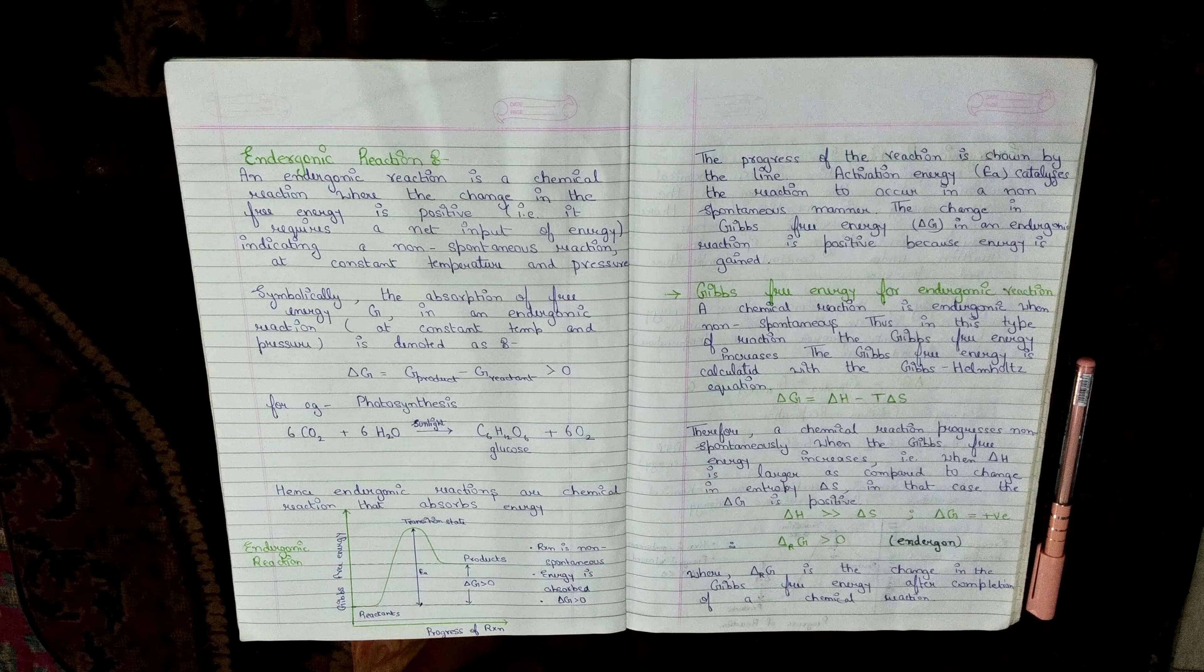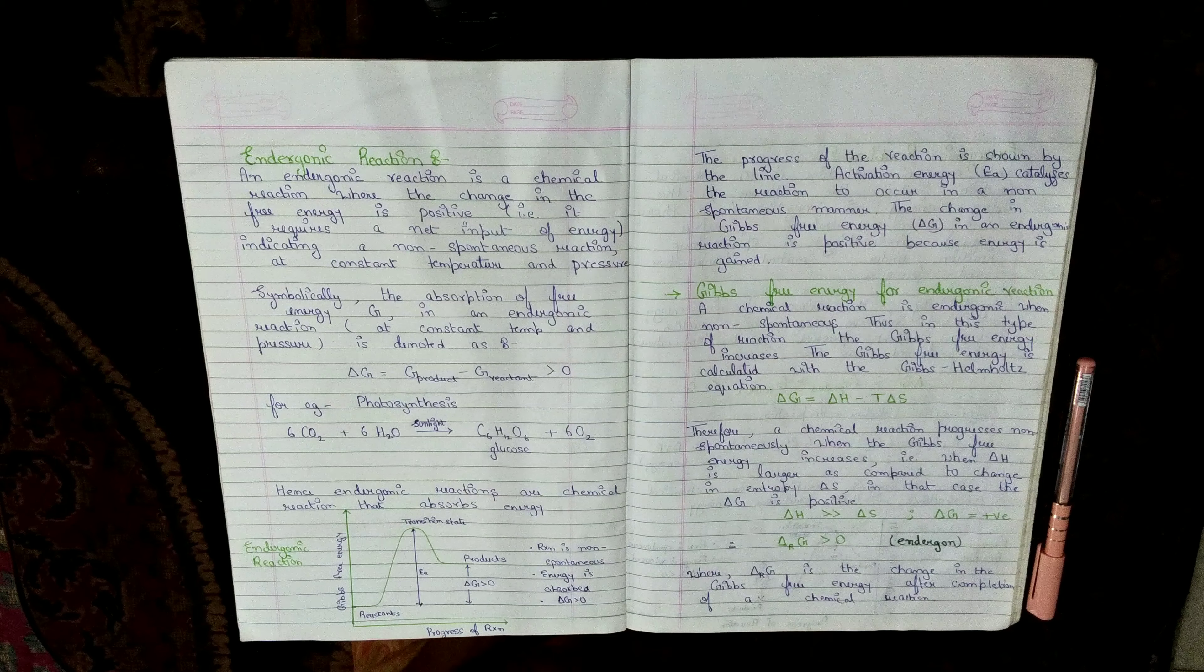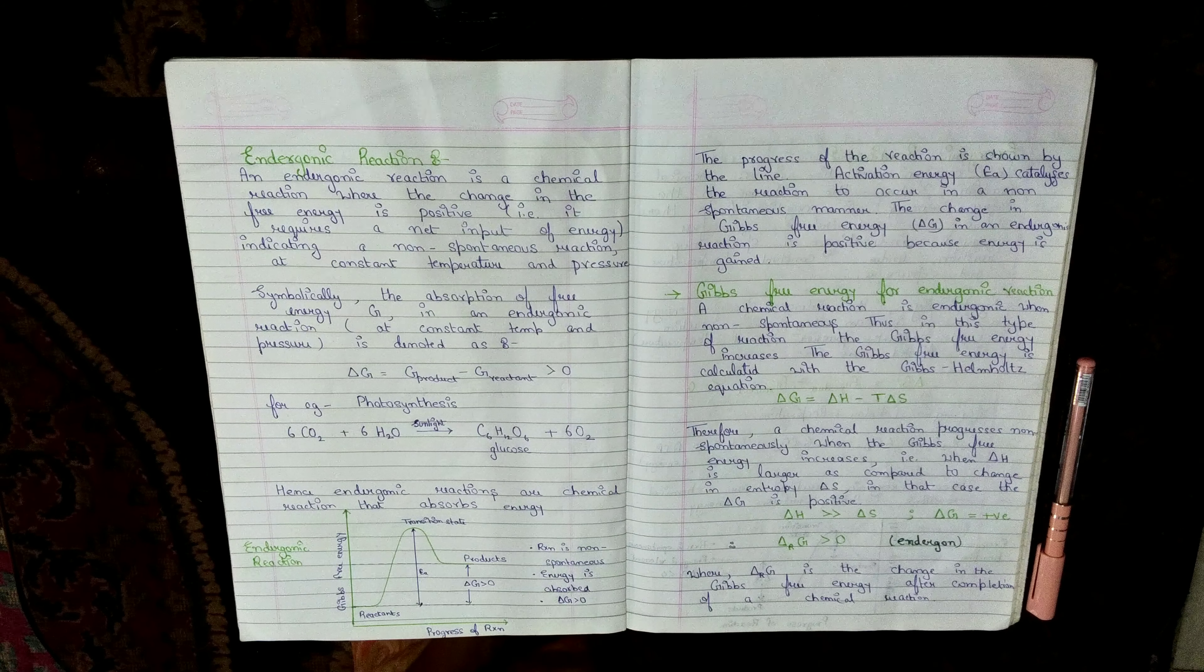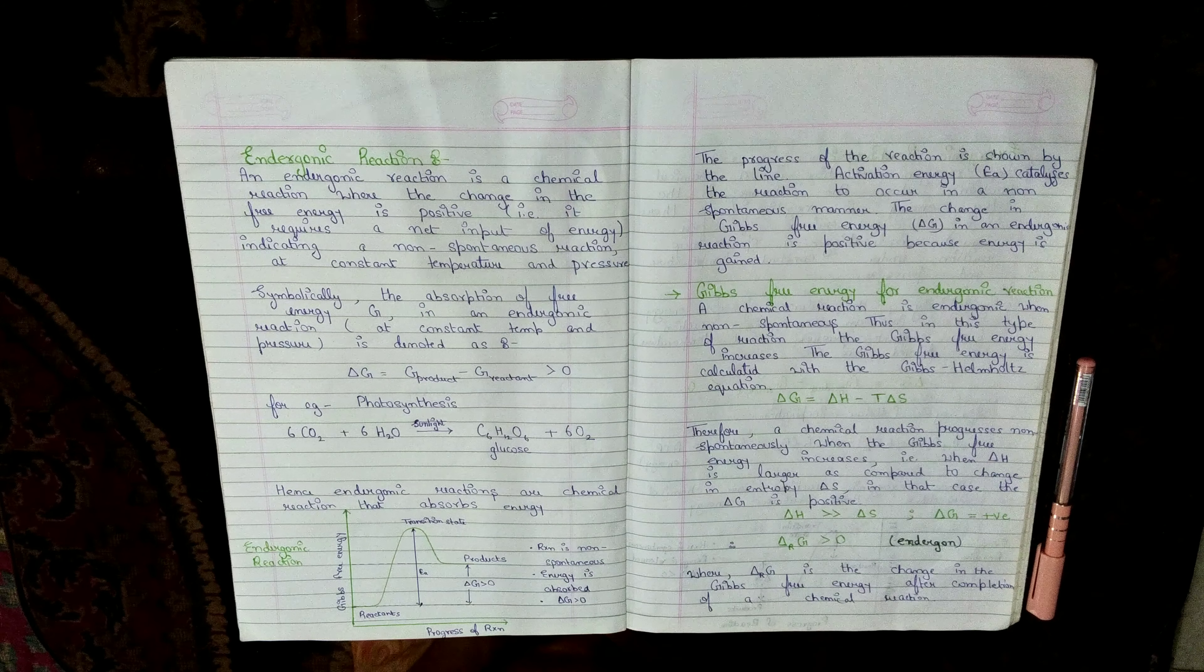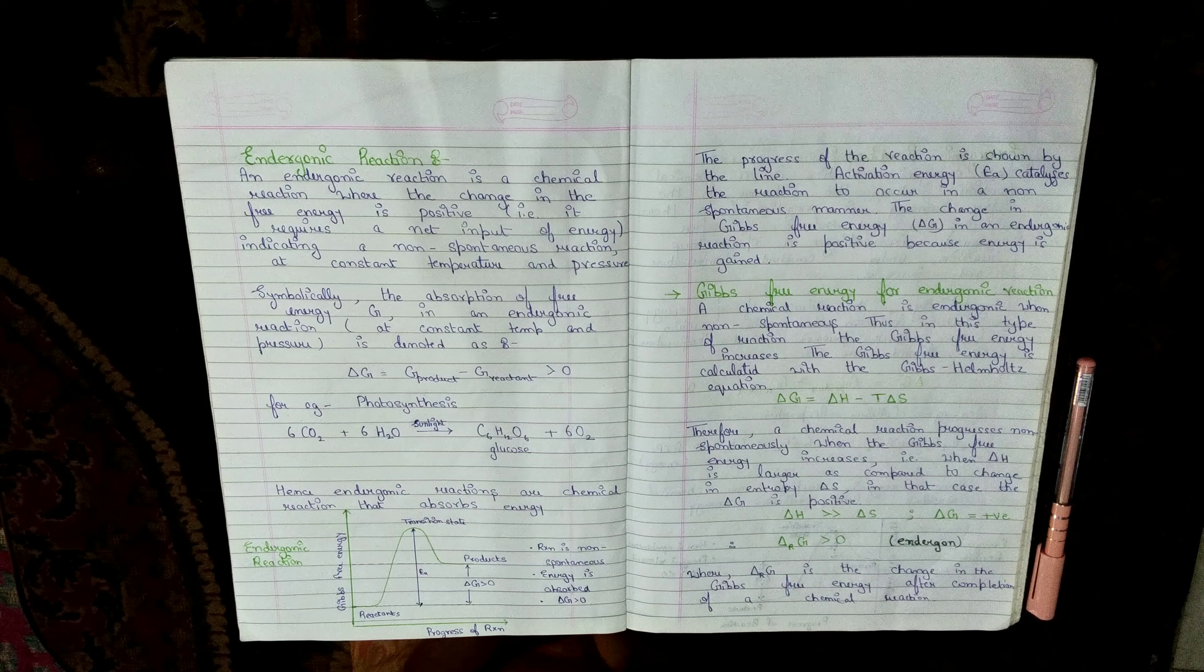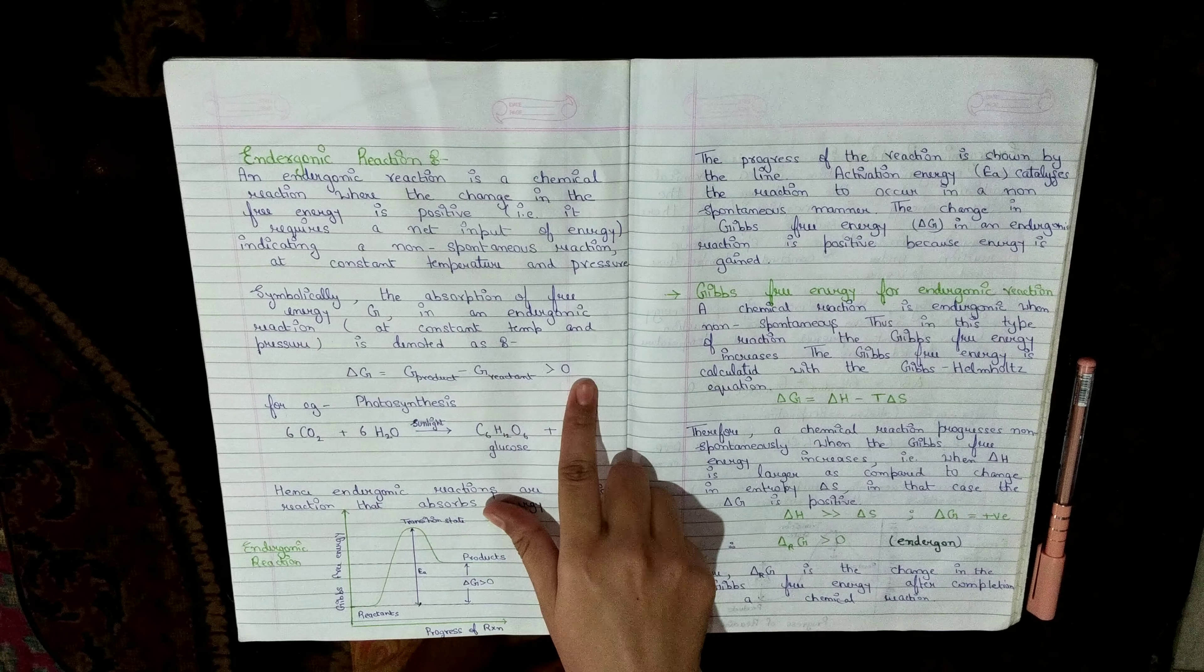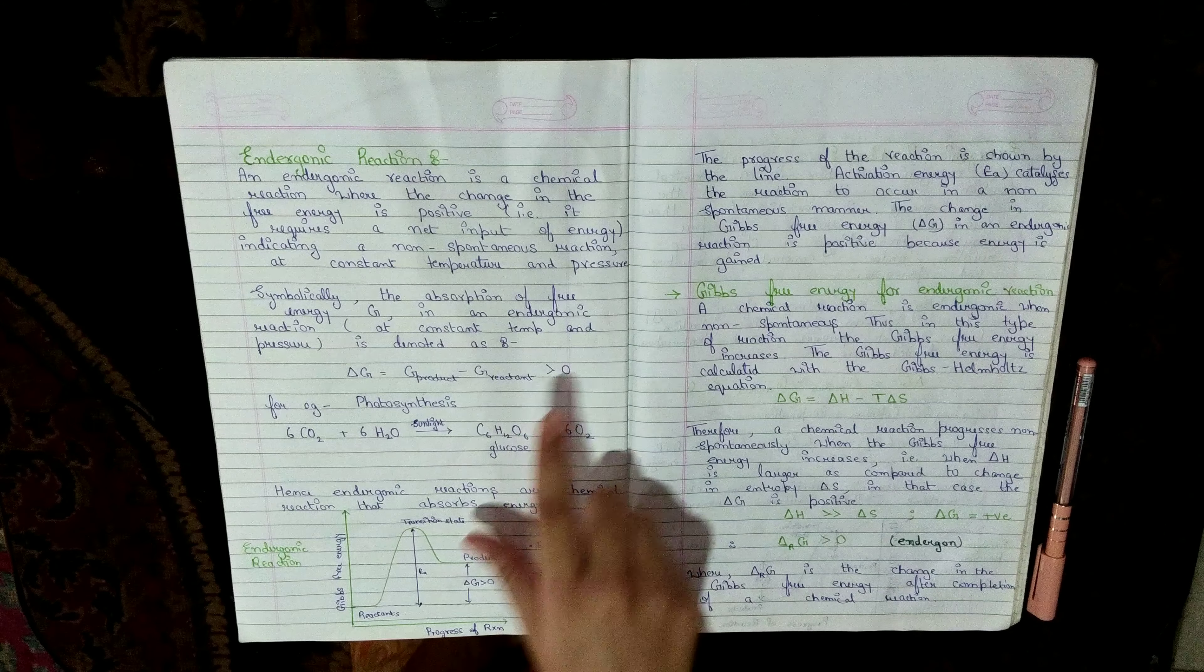Endogonic reactions are chemical reactions where delta G is positive, meaning they absorb energy at constant temperature and pressure. This indicates a non-spontaneous reaction where product formation is not favored. Delta G will be greater than zero in endogonic reactions.